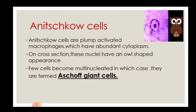Anitschkow cells are plump activated macrophages which have an abundant cytoplasm. On cross section, these nuclei have an owl-shaped appearance, which can be seen in this diagram. A few cells become multinucleated, in which case they are termed Aschoff giant cells.